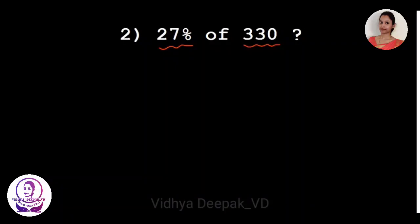Now let's see how to find 27 percent of 330. It's easy to find 10 percent of 330 — shifting the decimal place to the left gives us 33.0, or just 33. To make 27 percent, we need 10 plus 10 = 20, plus 7 percent. Since 7 percent is difficult to find directly, we break it down further.